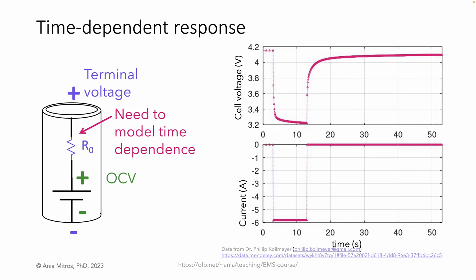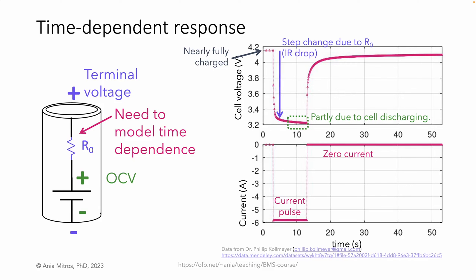On the top plot, we have cell voltage as a function of time. On the bottom plot, we have current as a function of time. What we see here is a nearly fully charged NMC cell subjected to a current pulse. Some of the decrease in voltage during the current pulse comes from the cell discharging — the OCV dropping as the state of charge drops. Much of the initial step change is due to the IR drop from the cell impedance modeled as R0. With a 700 millivolt drop due to a nearly 6 amp current pulse, we can estimate that this cell's impedance is about 120 milliohms. But we also see gentle curves and very gradual relaxation after the current has stopped — it takes a long time for the cell to settle. This is due to slow diffusion processes in the cell, called depolarization or voltage equilibration.